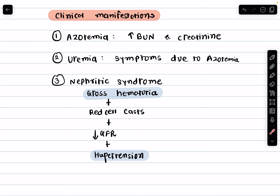Now let's discuss the clinical manifestations of renal pathology. First is azotemia, which is characterized by elevated blood urea nitrogen (BUN) and creatinine levels. This indicates that the kidneys are not filtering waste products efficiently.